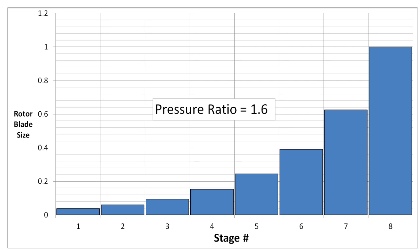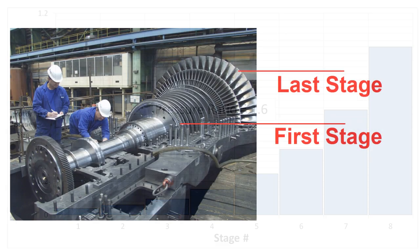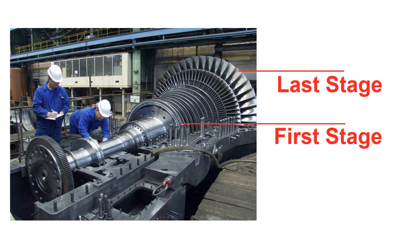That's why gas or steam turbines on ships, power plants, etc tend to have an exponentially increasing size along the axis.